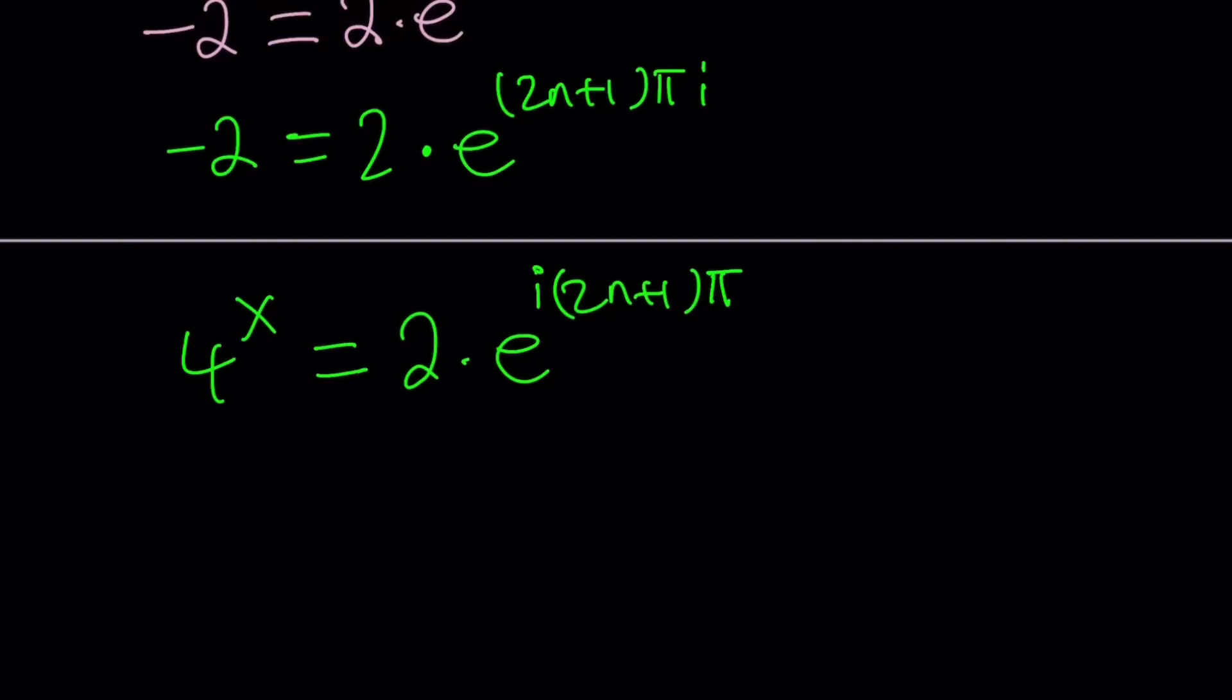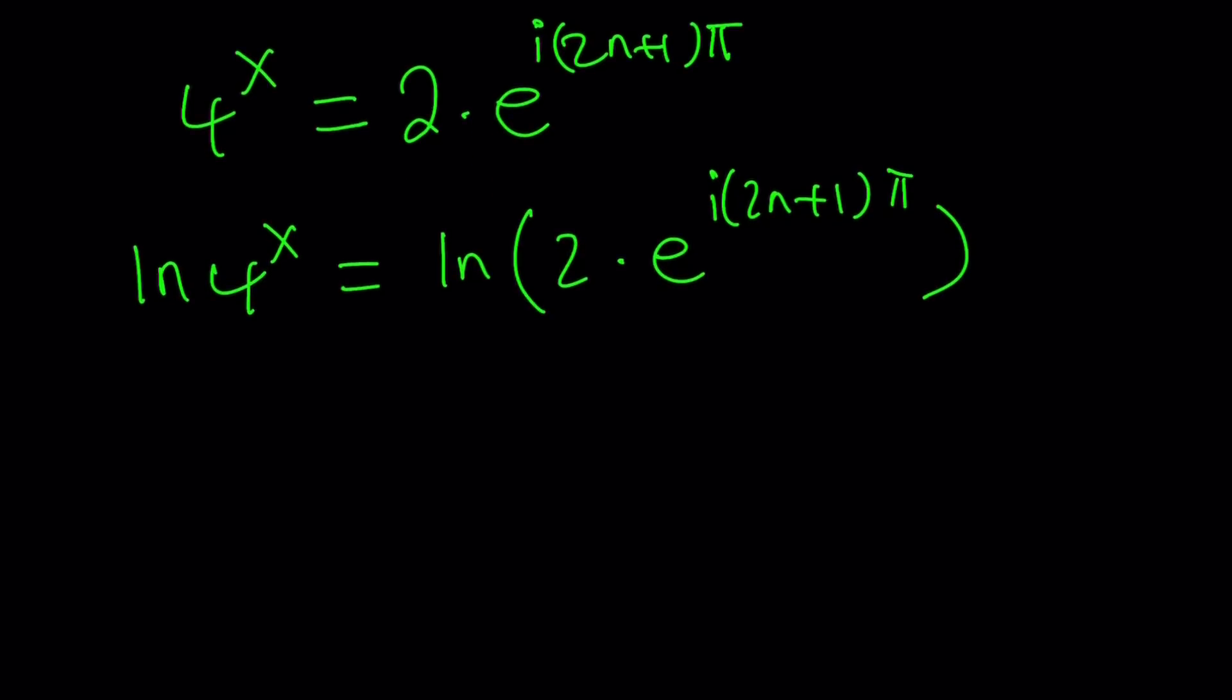Now let's go ahead and ln both sides, ln 4 to the power x equals ln 2 times e to the power i times 2n plus 1 pi. And we're going to use properties of logarithms here. So if you have a product, the log of a product is going to be the sum of logs, and this can be brought down.